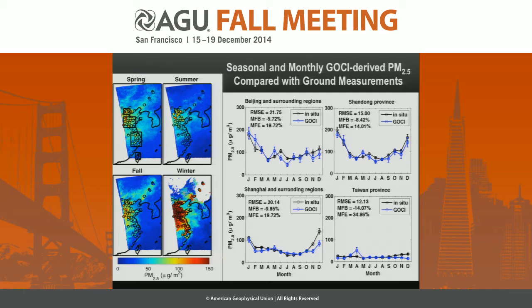From the monthly comparison, in terms of the bias of GOSI estimation of PM2.5, the RMSE ranges from 12 in Taiwan to the highest value of 21 in Beijing. There is apparent seasonal variation in three of the regions, similar to what we saw on the map, with high concentrations in winter and low in summer. However, there is no apparent seasonal variation in Taiwan, probably because the temperature is more stable there.